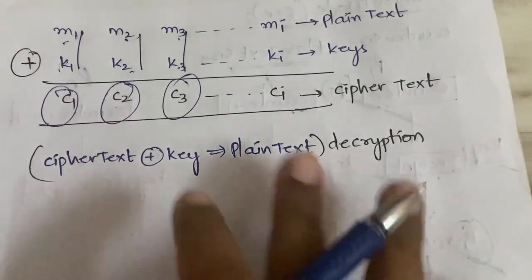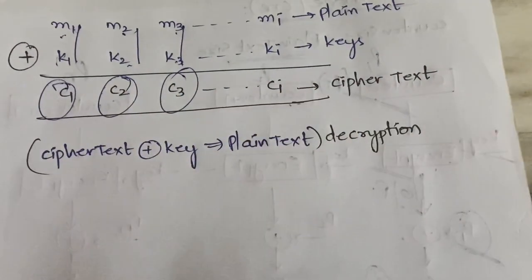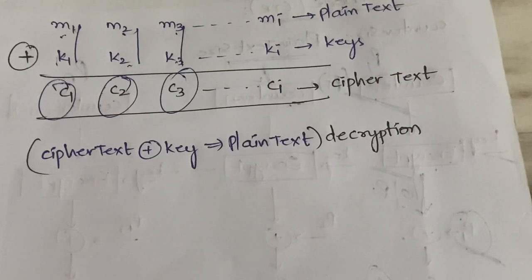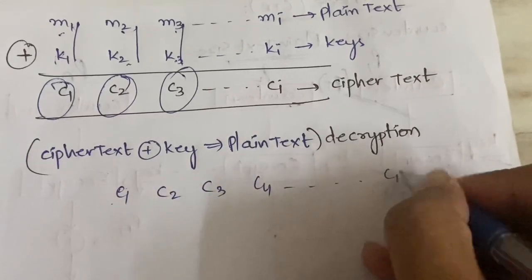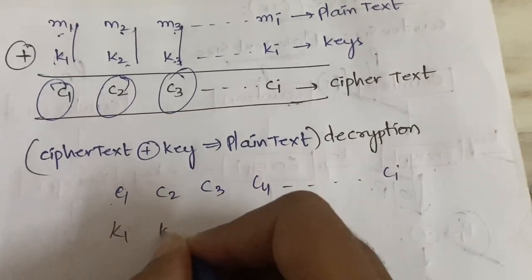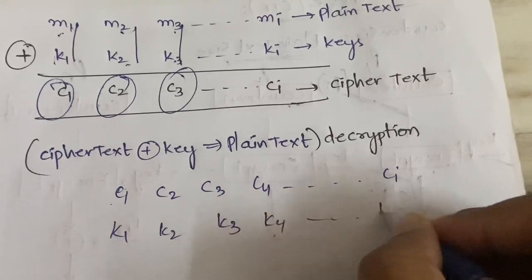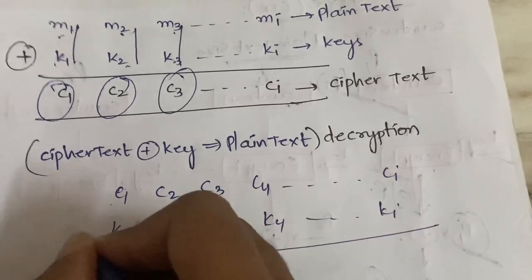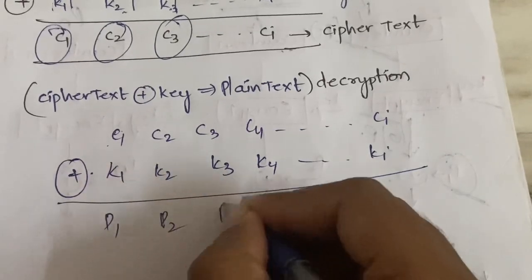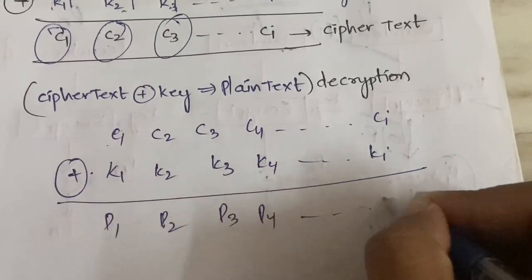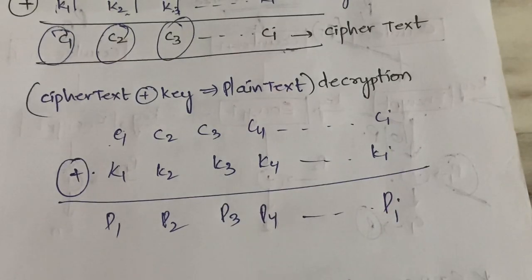Bit by bit you perform the XOR operation and you get each and every bit of the cipher text. Once the cipher text is generated, for decryption you take cipher text c1, c2, c3, c4, up to ci, and key k1, k2, k3, k4, up to ki, and again perform the bitwise XOR operation between the cipher text and the key to get the plain text p1, p2, p3, p4, up to pi.